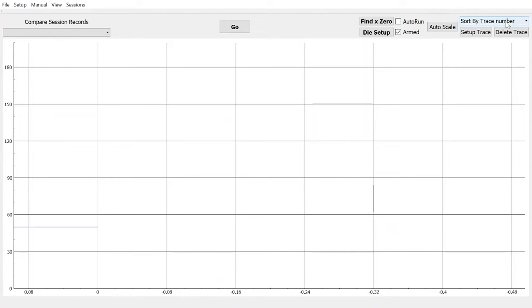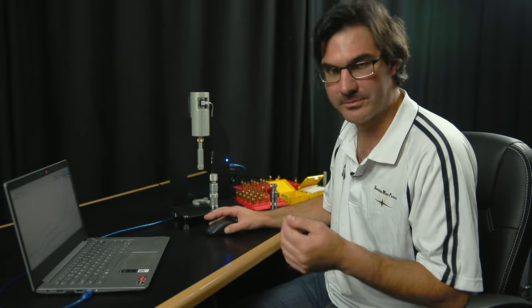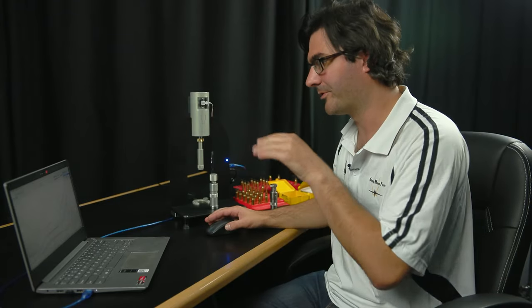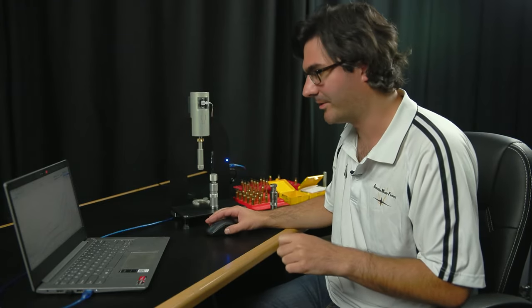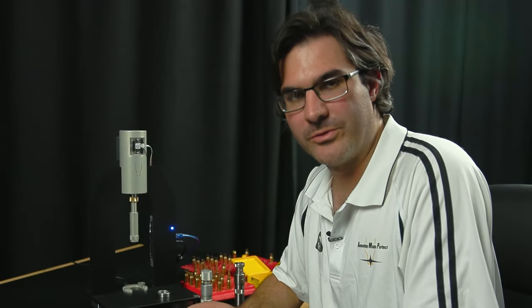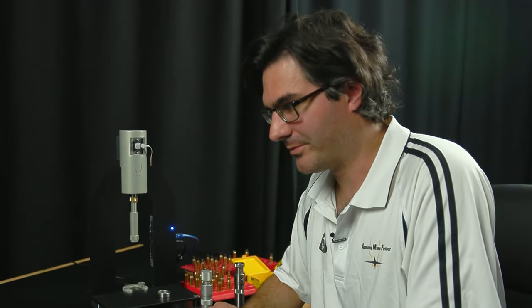To the right of that, you've got the sort menu. That allows you to sort by either the order in which the trace was created or by peak force or the trace with the most amount of force required to seat the bullet down to the least. What we're trying to achieve with everything hand loading is consistency.